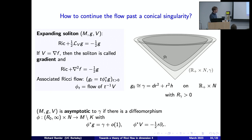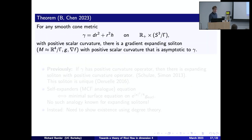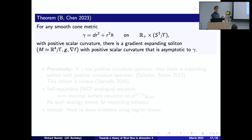Here is our main result: for any smooth cone metric on a cone, assuming the link is diffeomorphic to a spherical space form and has positive scalar curvature — the only topological restriction — there is a gradient expanding soliton asymptotic to this cone. This is completely general in this setting and solves the question of resolving conical singularities when the link is diffeomorphic to a spherical space form.